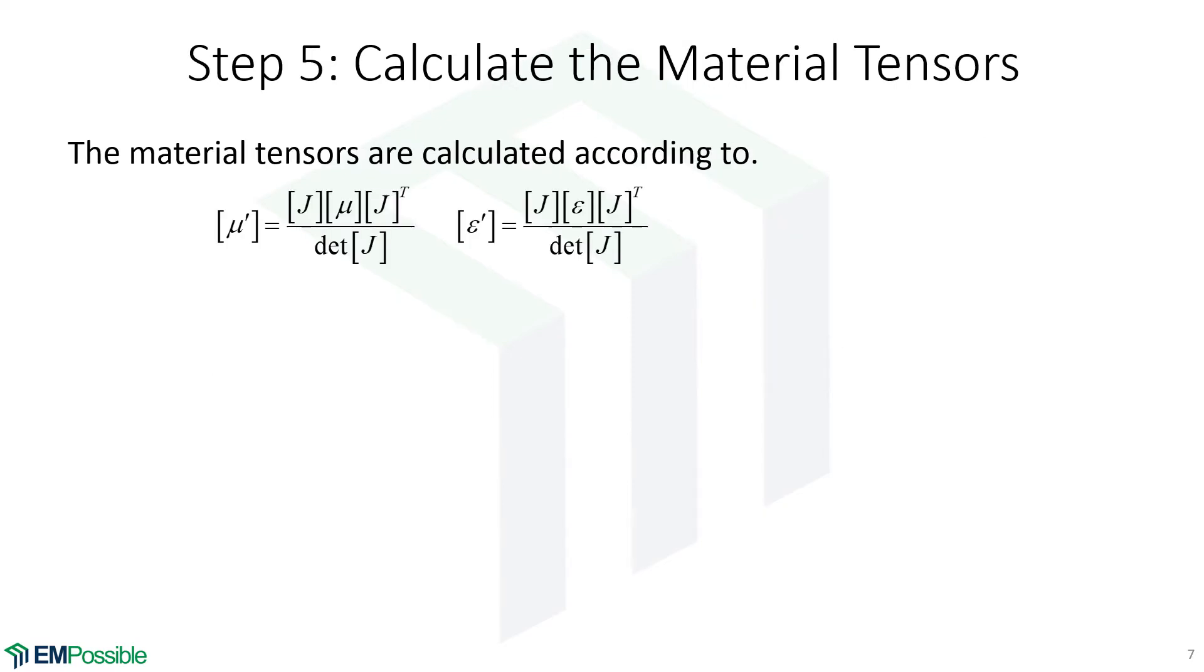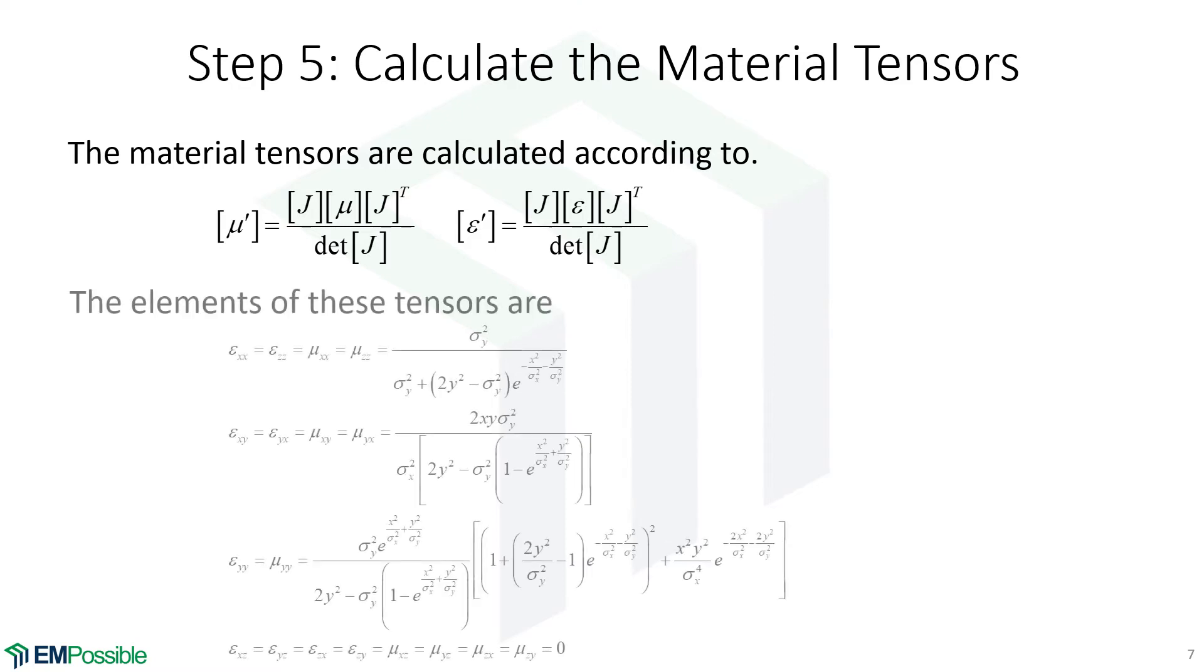Now that we have the Jacobian, we can transform our material properties. And we started off with vacuum in the back. So this really is just the identity matrix here and here. We use our Jacobian and calculate the permeability and permittivity tensors in our transform coordinate system. When we work through the math, we end up here. Now the math can be difficult, but in principle, it's simple. We're just doing a bunch of matrix multiplications. And here's our final tensor.